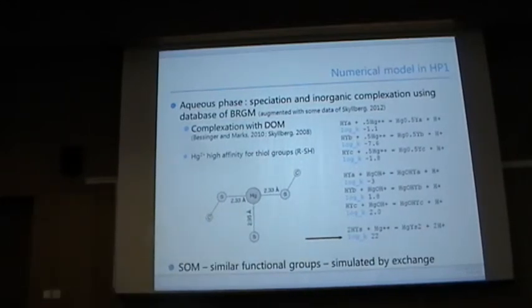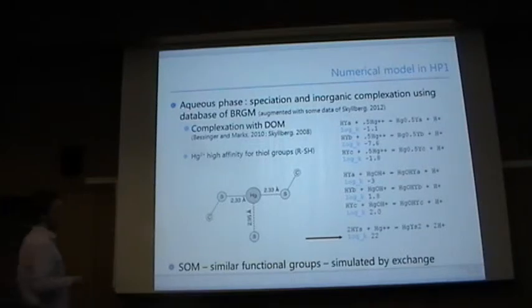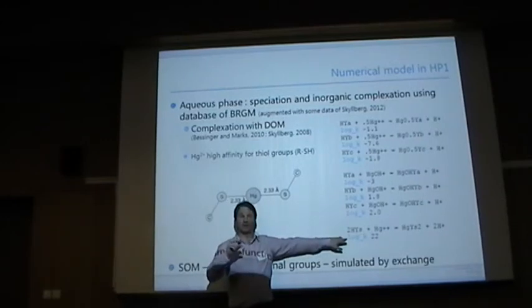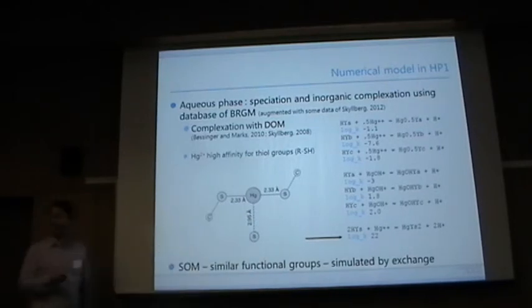And the soil organic matter model. So we also have the solid-phase organic matter, and we have similarly groups of functional groups and thiol sites on it. And we assimilate the adsorption process by cation exchange processes. It's such that this has a rather small capacity but it's very strongly binding. So it's a very specific binding site.